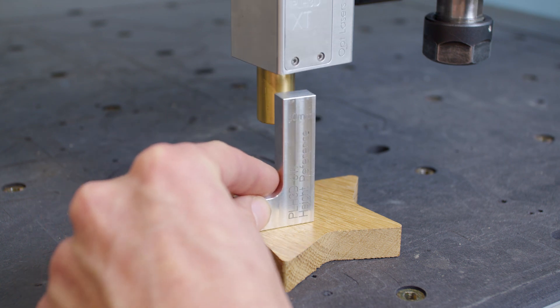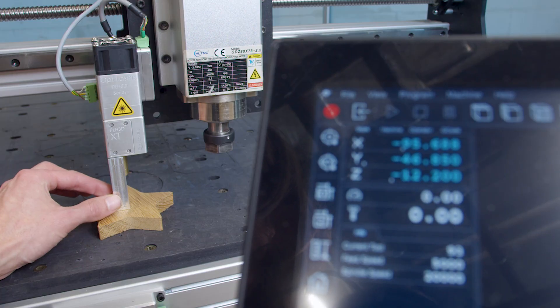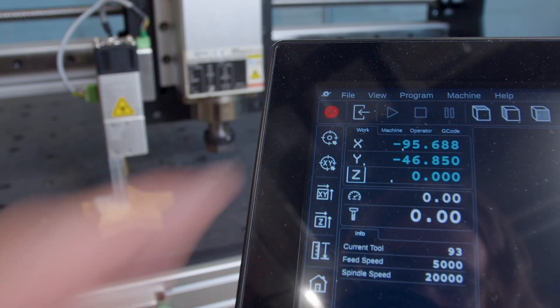You can also of course do it manually with the aluminum gauge and jog to the correct focal lens. Then you can set it to Z0.